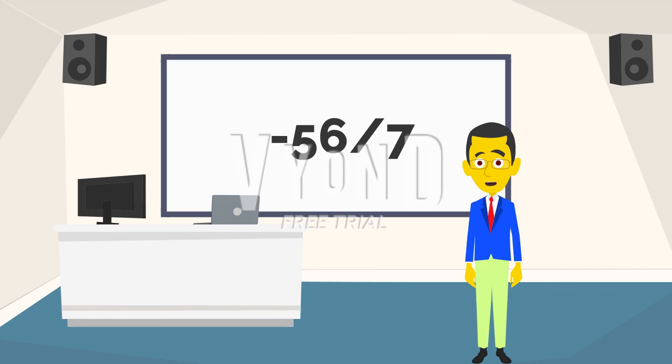Alright. A negative divides a positive is a negative. Nice. And does anybody know what 56 divided by 7 is? It's a negative 8. Correct. And there we go. We get a negative 8.